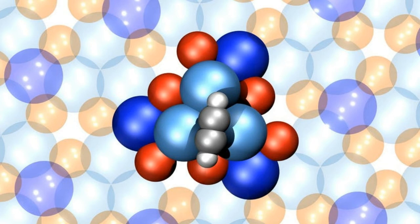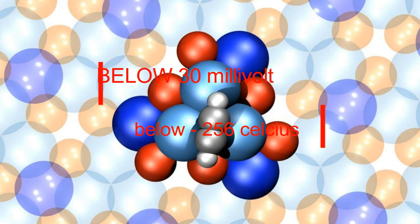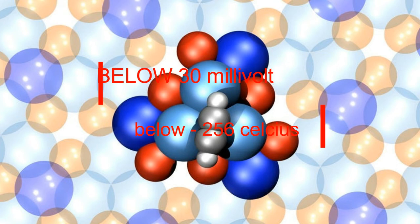Now, another surprising thing came to know about this molecular motor. As we already know in physics, for an object to move it should overcome the resistance, then only an object can move. But here if you observe this molecular motor below 30 millivolt and also less than minus 256 degrees Celsius, this rotor rotates.